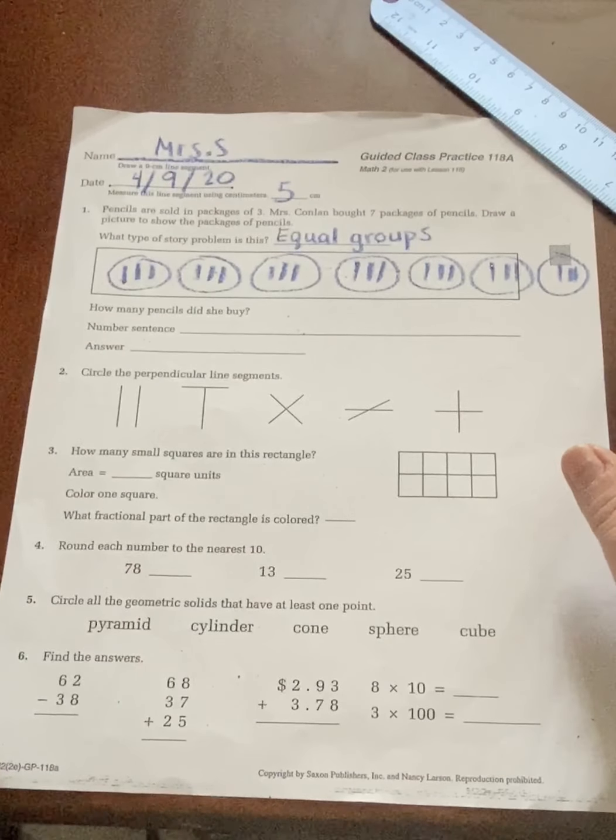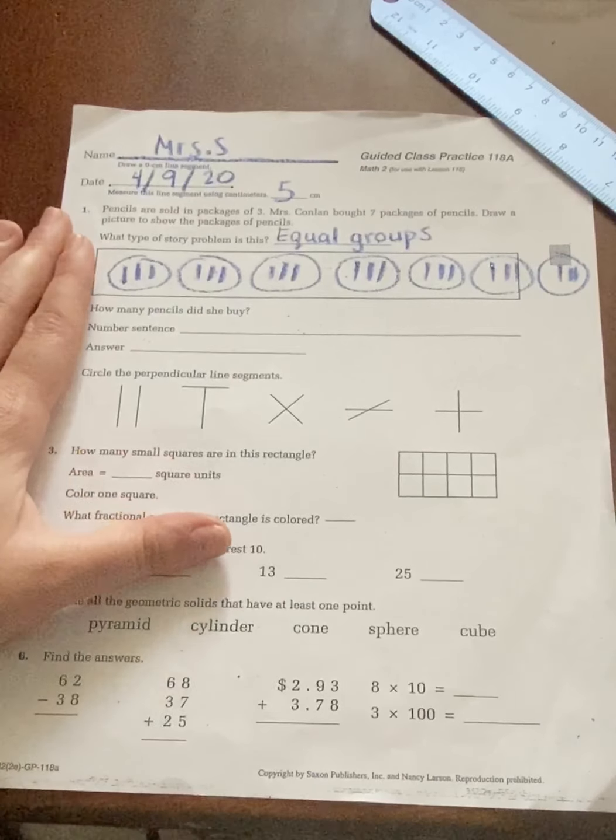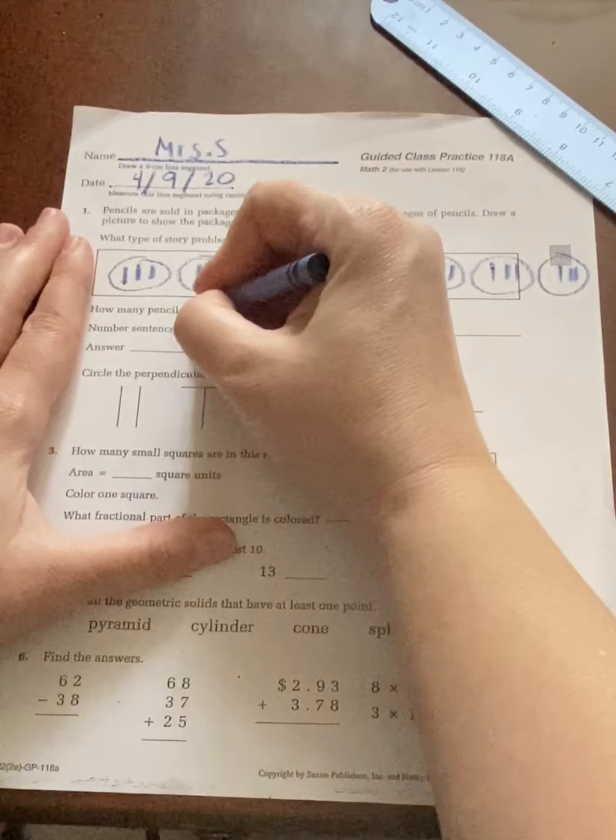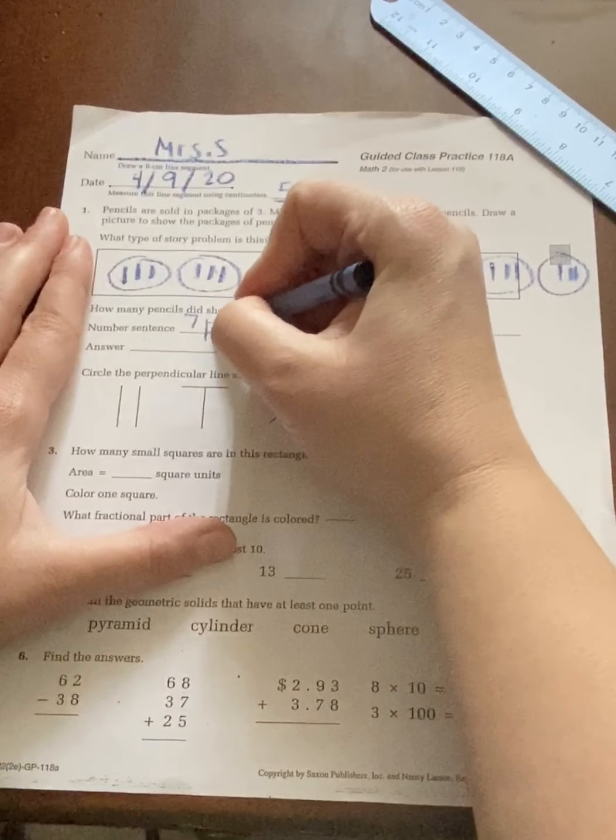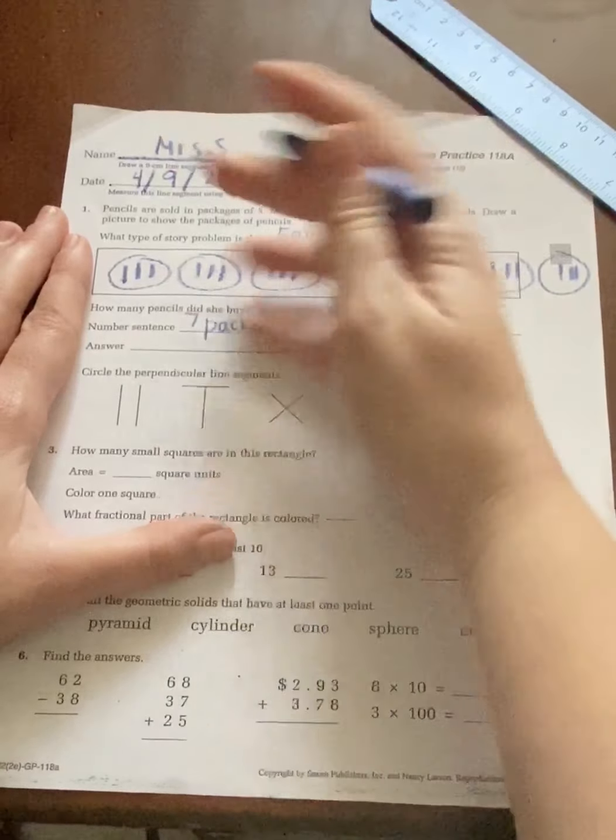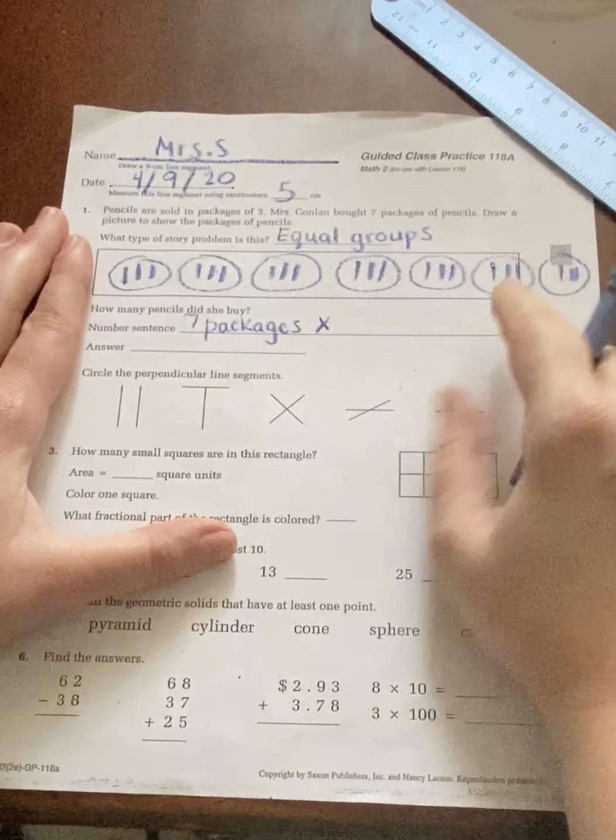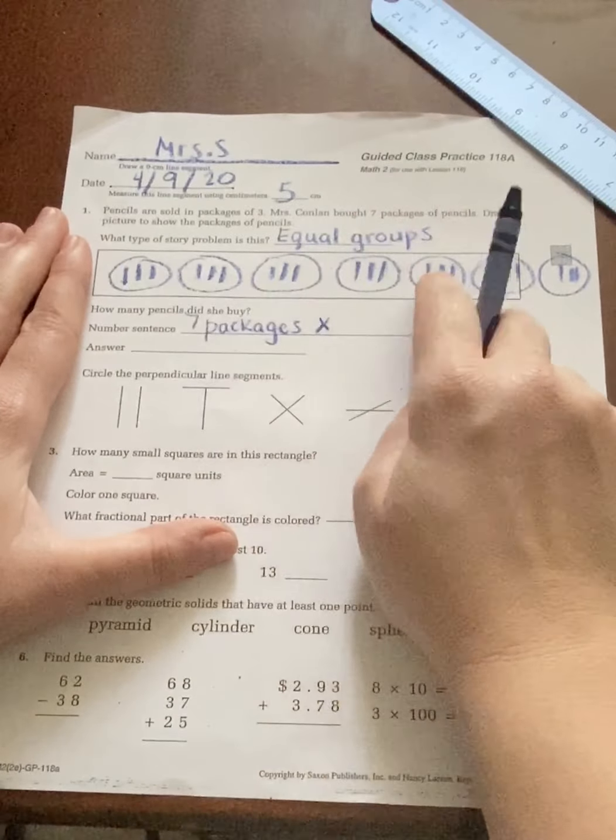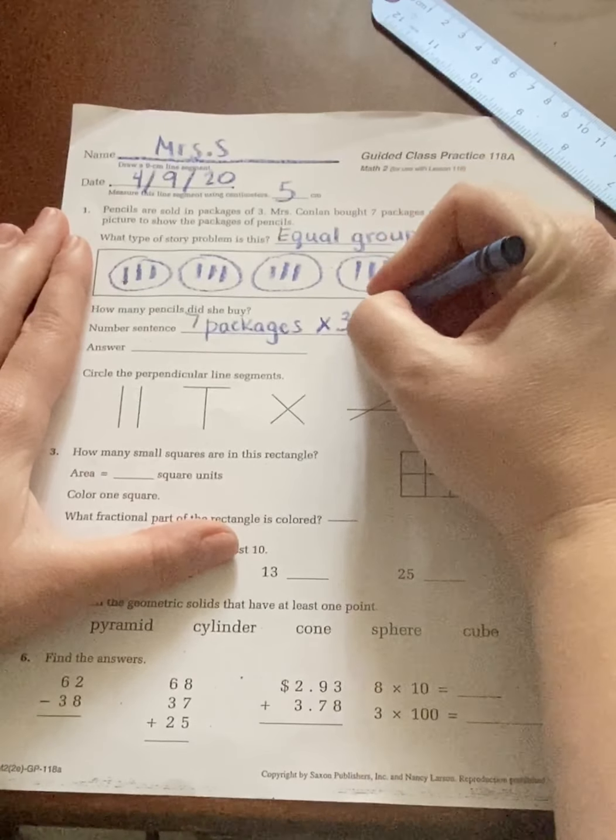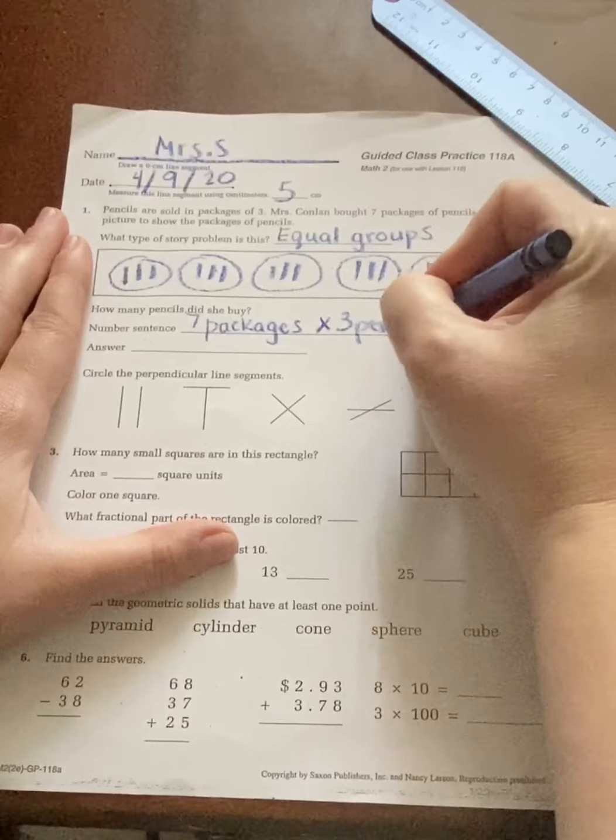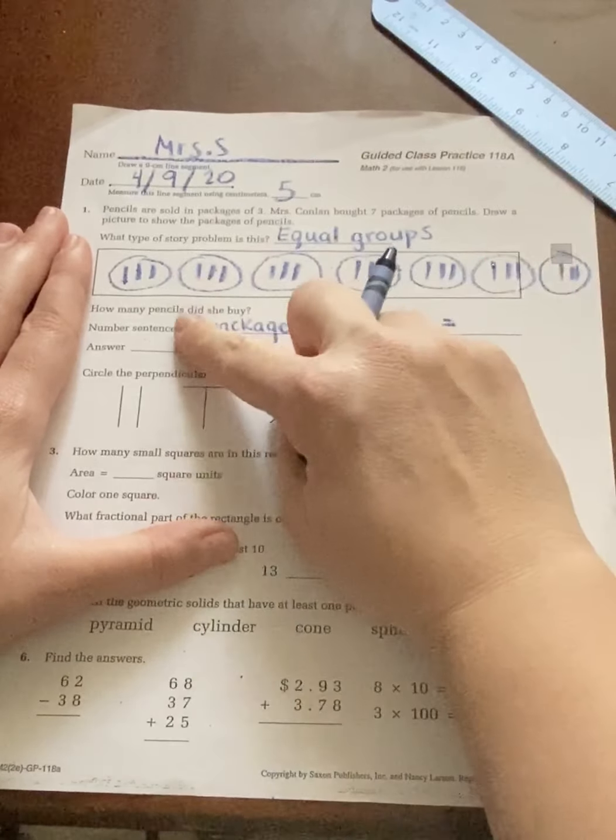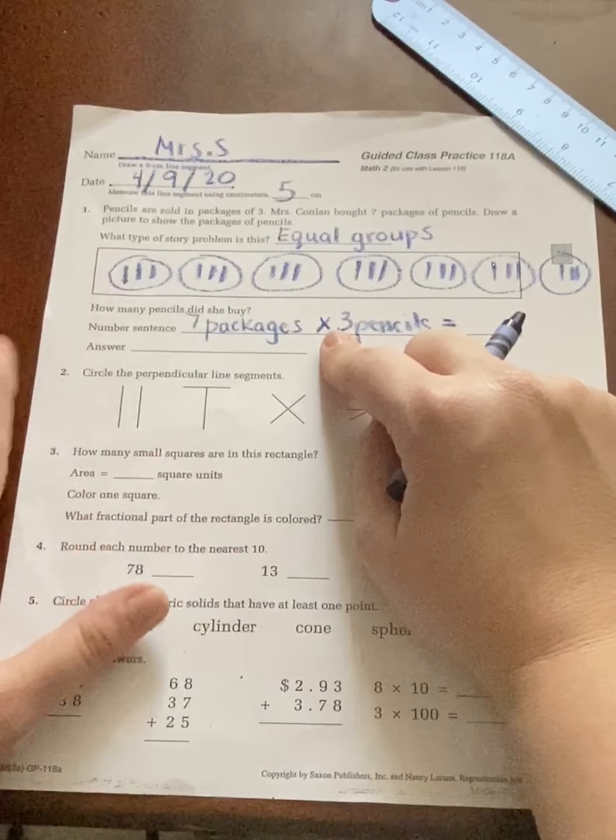So it says how many pencils did she buy? Let's do our number sentence. We have seven packages times how many pencils were in each group, three equals, now we have to do seven times three.